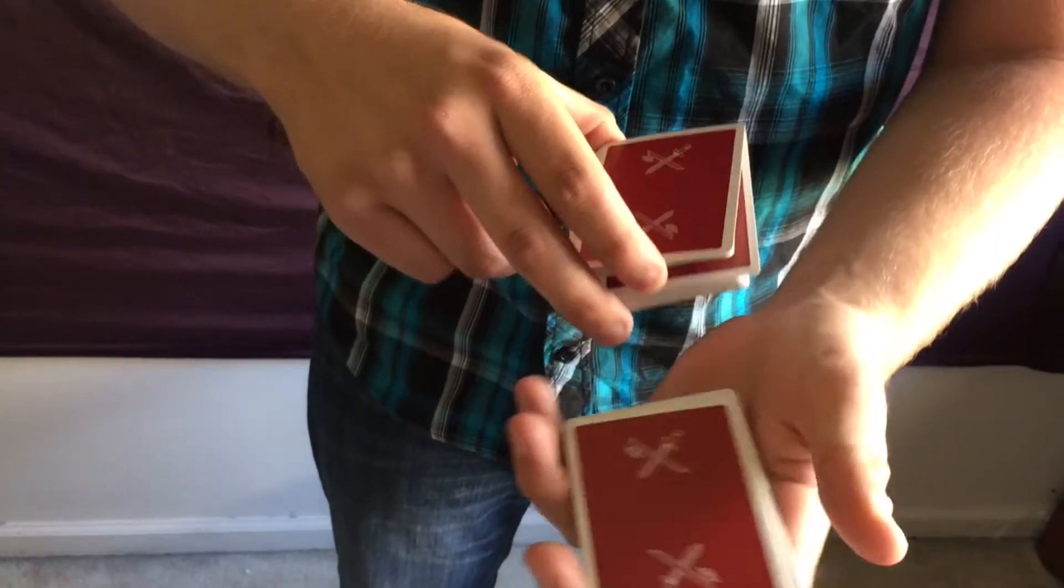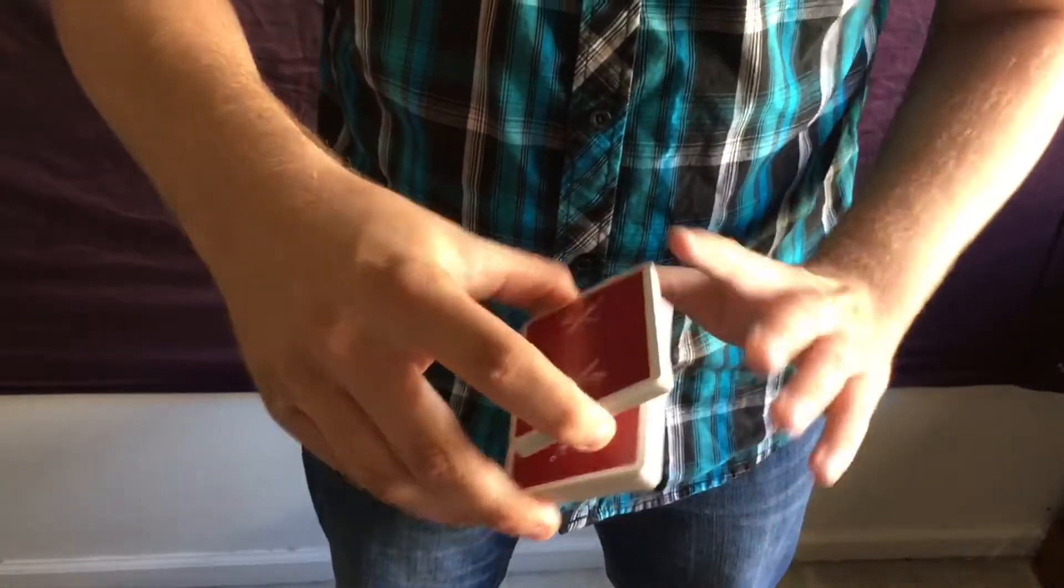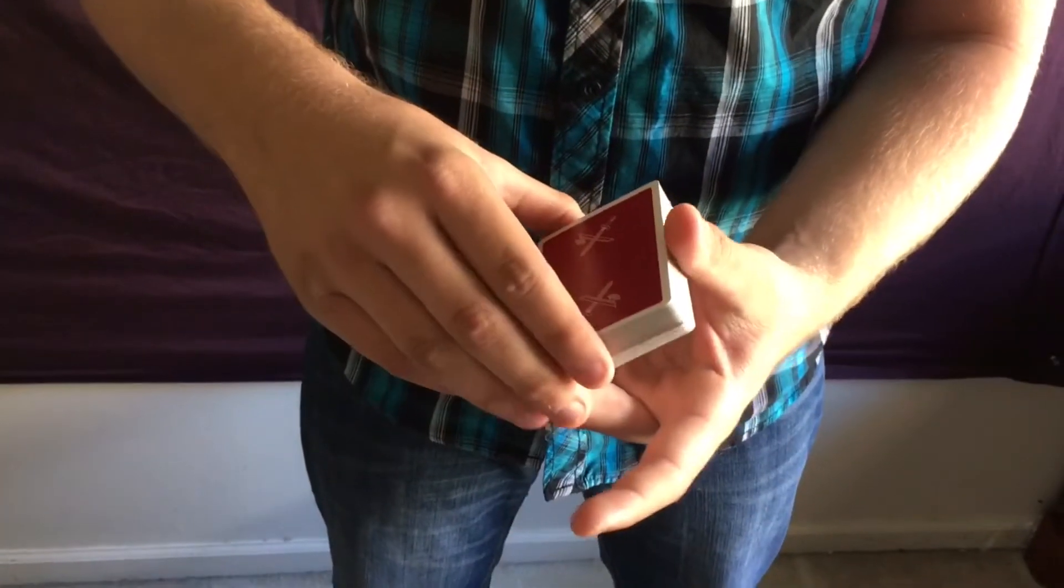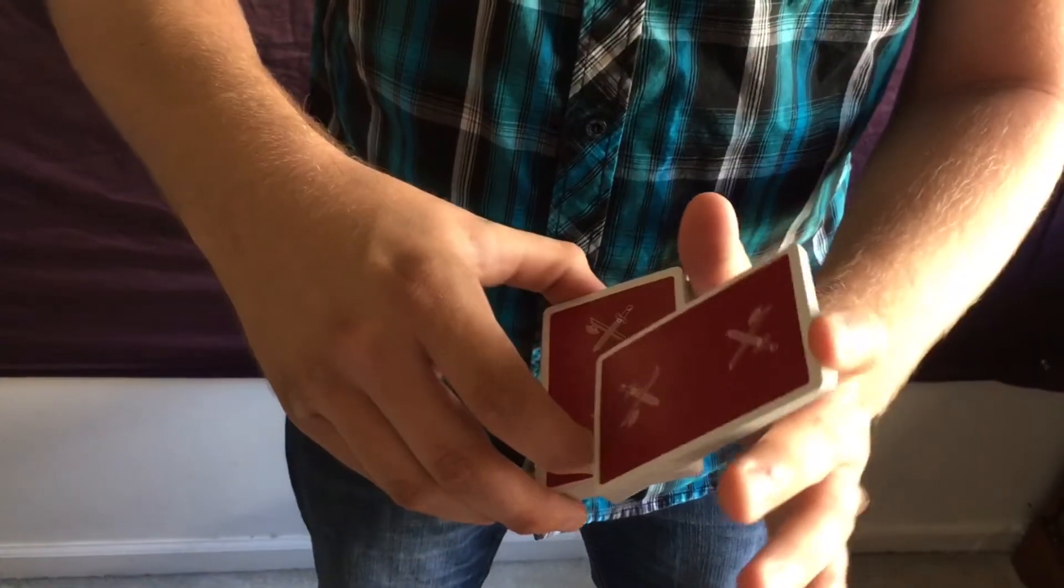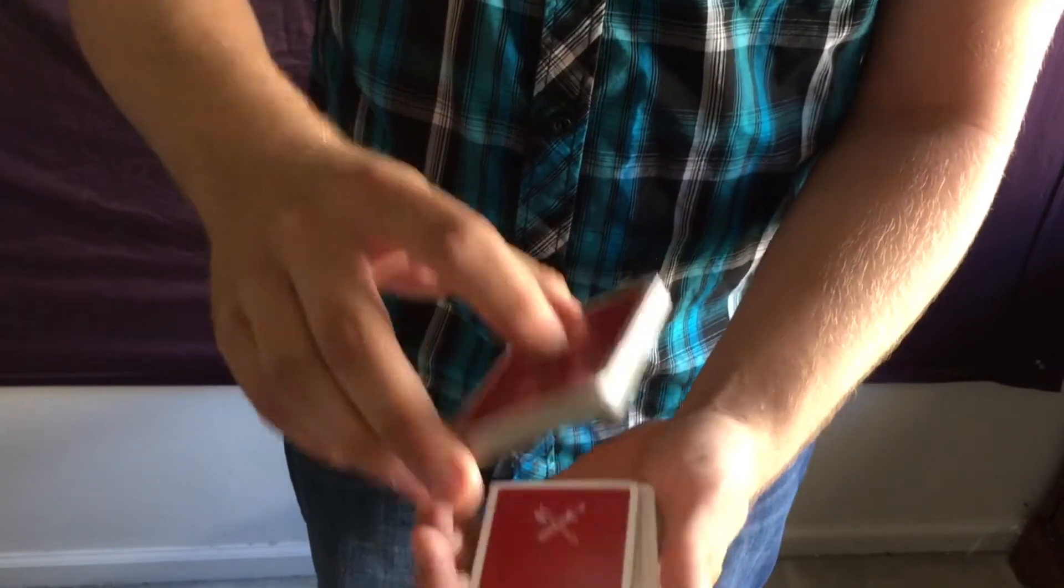In fast motion it looks like this. You're basically rolling it on this finger, just rolling it like that and catching it.